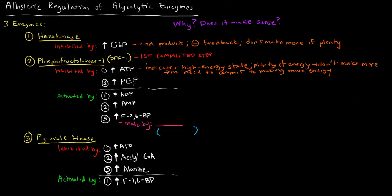Why would high levels of phosphoenolpyruvate, or PEP, inhibit phosphofructokinase? PEP comes later in the pathway of glycolysis. If there's a buildup of it, that probably means the step from PEP via pyruvate kinase to pyruvate is not happening. If that's not happening, we don't want to keep creating PEP. So if PEP builds up, it tells phosphofructokinase: don't make more of me. There's no need to make more of what's already in plenty.